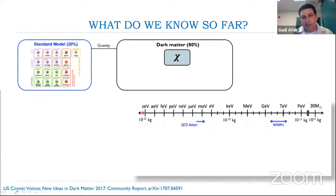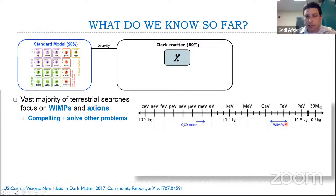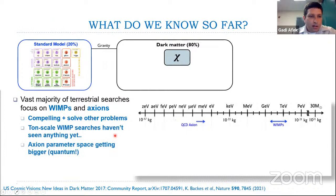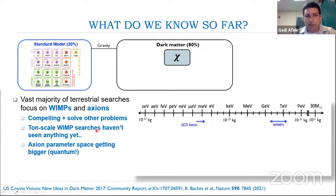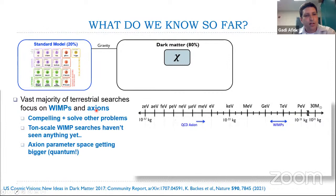What do we know about dark matter? Not a lot. We know it interacts with normal matter via gravity, and may have other interactions. The available mass range spans 60+ orders of magnitude. Two prominent model examples are weakly interacting massive particles (WIMPs) and axions, which solve the dark matter problem and others. However, three decades of ton-scale WIMP searches have found nothing, and the axion parameter space keeps growing — requiring beyond-standard-quantum-limit measurements to search faster.